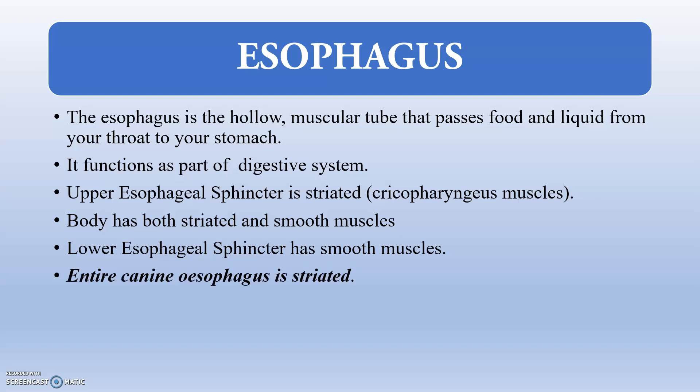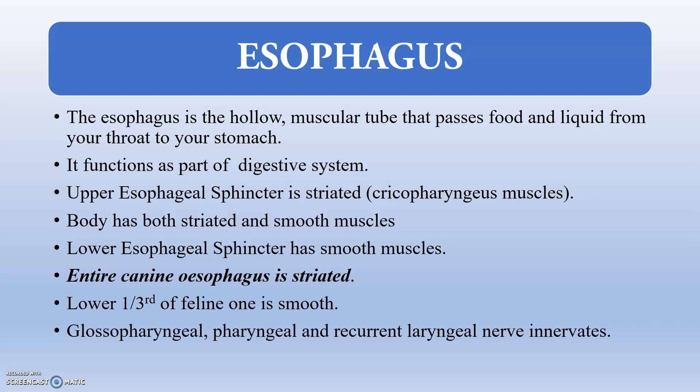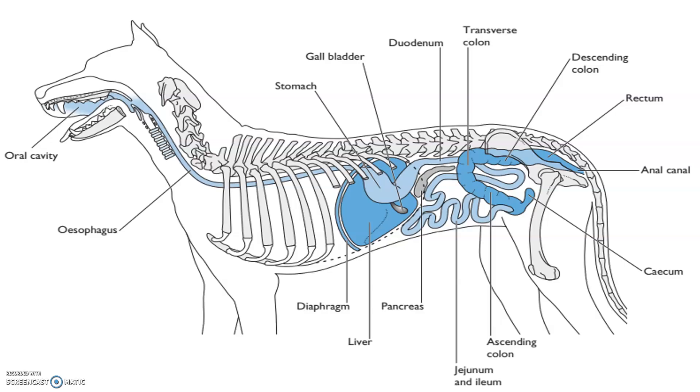The entire canine esophagus is striated, while the lower one third in humans also has smooth muscle. It is mainly innervated by the glossopharyngeal, pharyngeal, and recurrent laryngeal nerves. The esophageal branch of the thoracic aorta supplies blood to the esophagus.